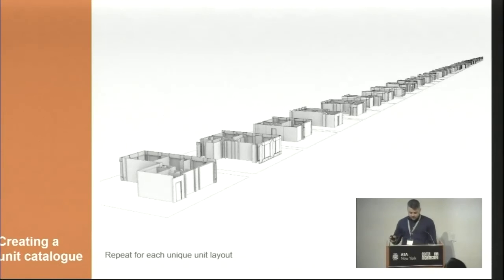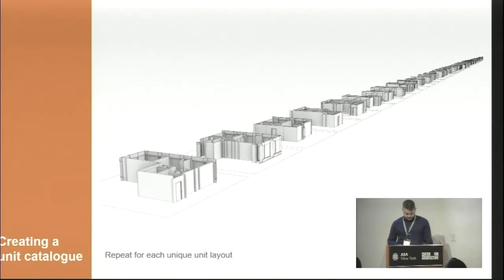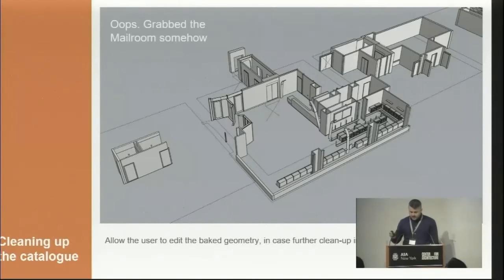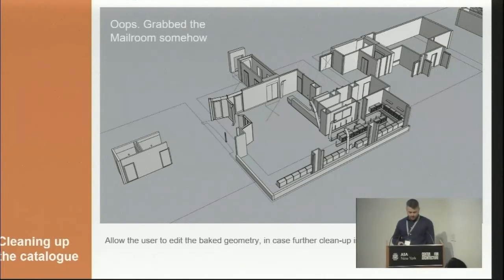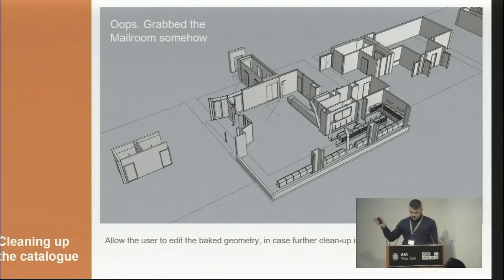We repeat this over and over, one at a time, until we've pulled out all the units from the project — here you see approximately 100 pulled out of a single project. Baking the geometry was a specific workflow decision meant to support the human-in-the-loop concept. Baking everything allows the human to take a quick look at the geometry and confirm the extraction worked properly, as well as to make further edits to address weird edge cases. Here you can see that we've accidentally extracted the mail room — the human's common sense identifies this easily and deletes it so it doesn't confuse the ML model.